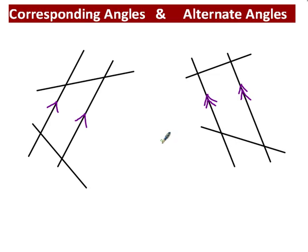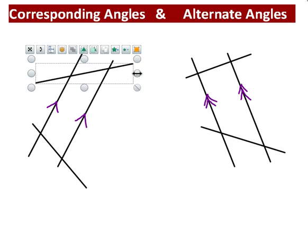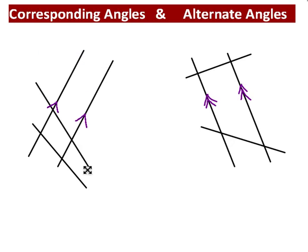In this video I'm going to show you what corresponding angles and alternate angles are, and then use what we learn about them to solve some missing angle problems. Corresponding and alternate angles are both created when we've got a couple of parallel lines and a line going across both of them. The line going across can be wherever you like, at whichever angle - that's why I've drawn two of them, just so that we can practice with two.